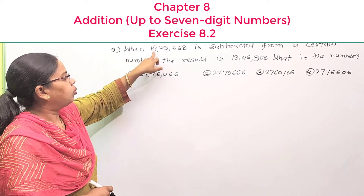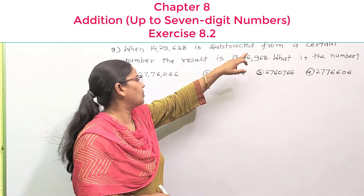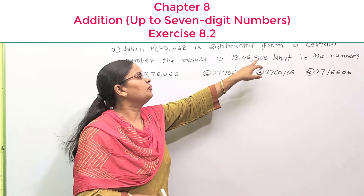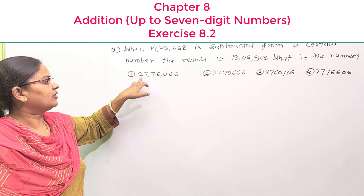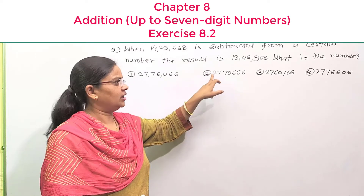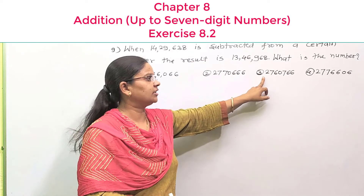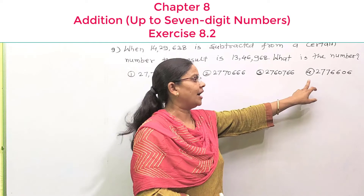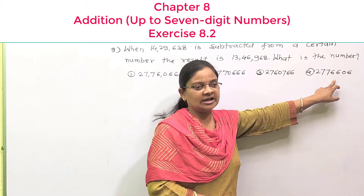Question number 9/10: 14,29,638 is subtracted from a certain number. The result is 14,46,968. What is the number? Option number 1: 27,76,606. Option number 2: 27,17,666. Option number 3: 27,66,766. And option number 4: 27,73,606.